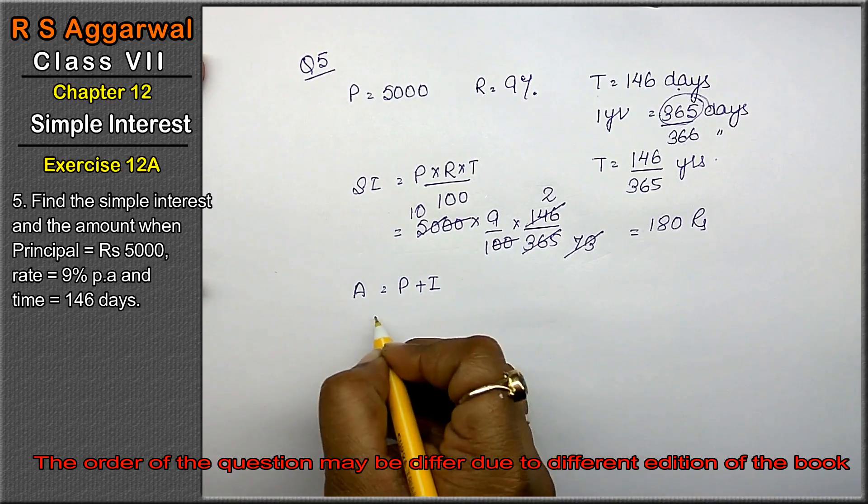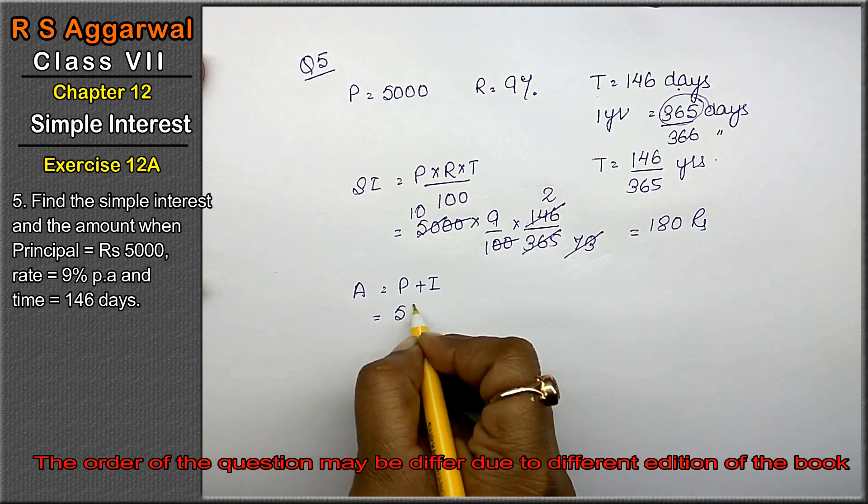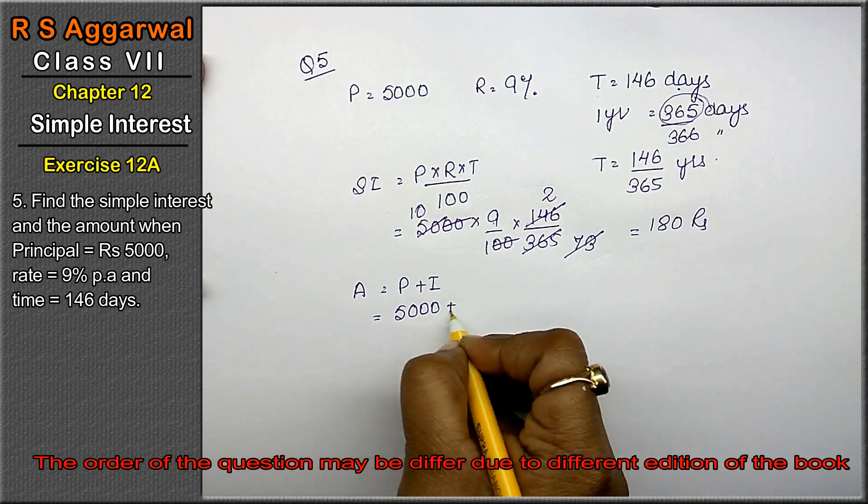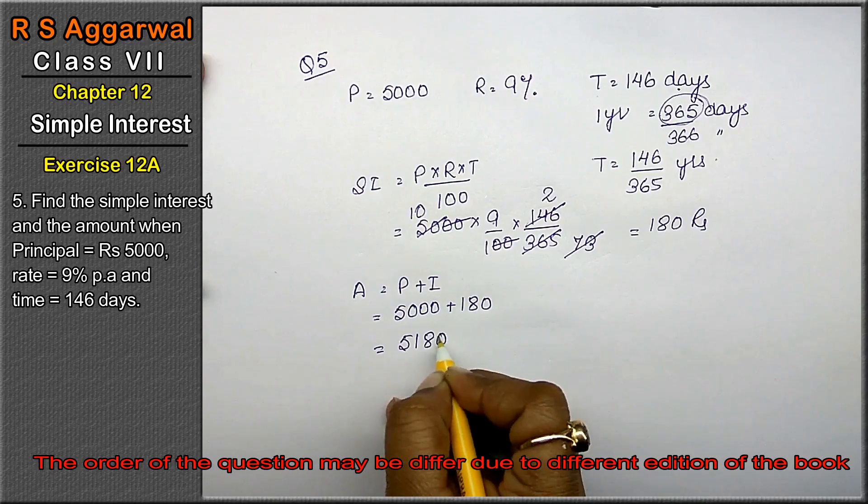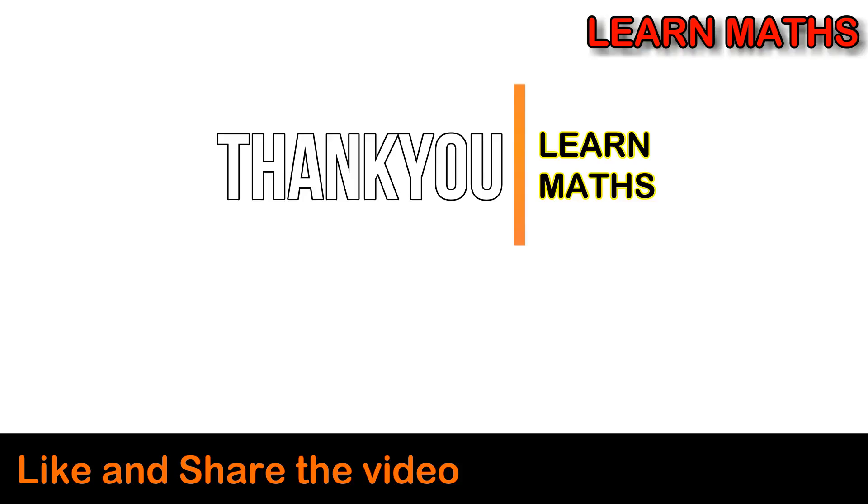Amount: P plus I. P is 5000, I is 180, giving 5180 as the answer. Please subscribe my channel Learn Maths and share it with your friends. Thank you.